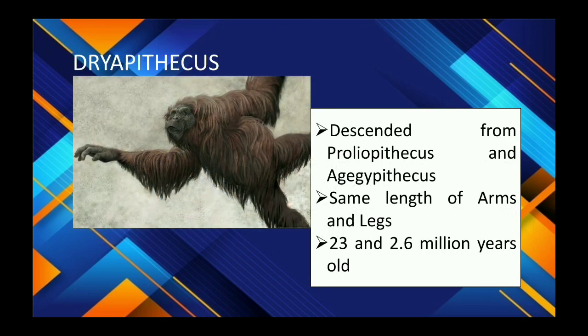Next is Dryopithecus, descended from Propliopithecus and Aegyptopithecus, dating 23 to 2.6 million years old. It had arms and legs of the same length, a semi-erect posture without a brow ridge, was a knuckle walker, ate fruits and leaves, and is considered the common ancestor of man and apes.